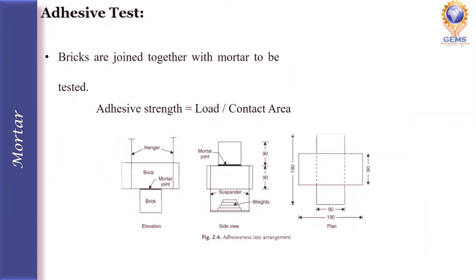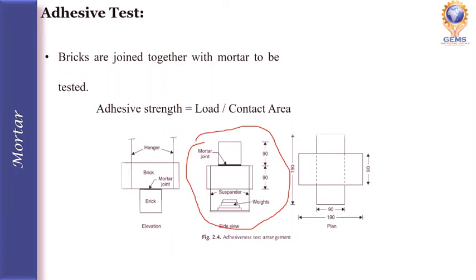Next is the adhesive test. In this test, bricks are joined together with the mortar to be tested. Two bricks are joined by mortar: the upper brick is suspended from an overhead support, and a board is hung on the lower brick. Weights are added to the board on the lower brick until the bricks separate. The weight at which the bricks separate is noted, and the adhesive strength equals load divided by contact area.